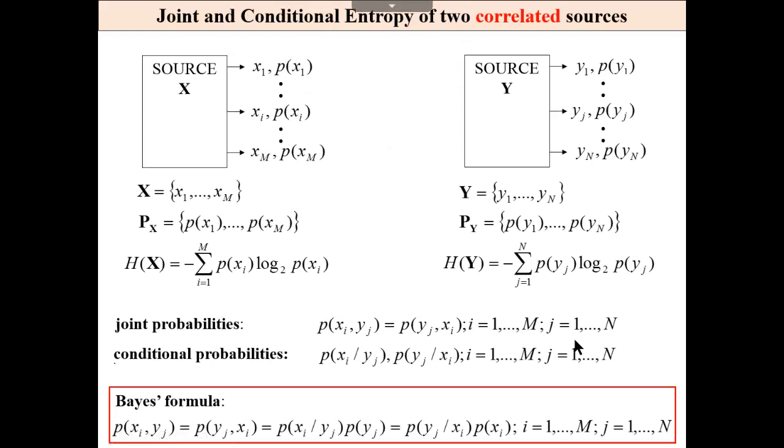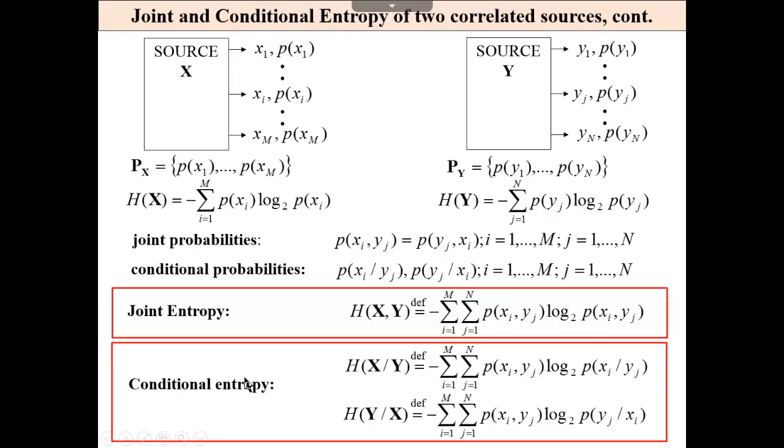Now let me consider the situation that we have two sources and they are correlated. What it means that if source x generates xi, then we know something already about source y. And this relationship, correlation, is described by conditional probabilities. If x, then y. Then we may define joint probabilities using Bayes's formula, which is below here.